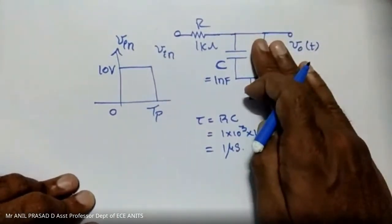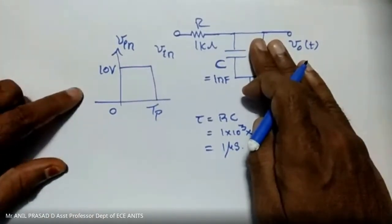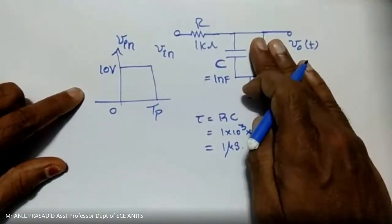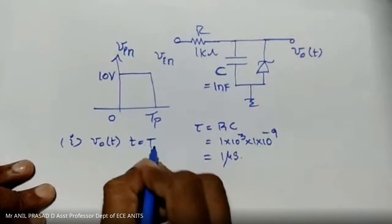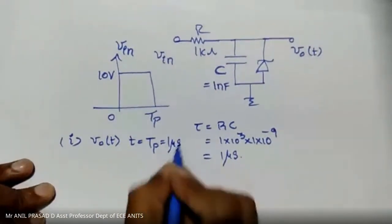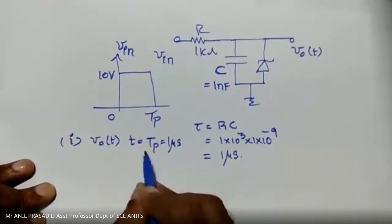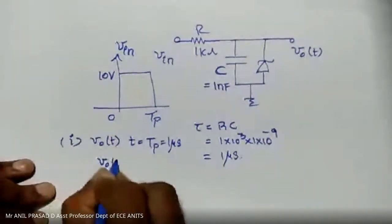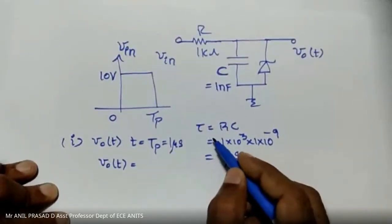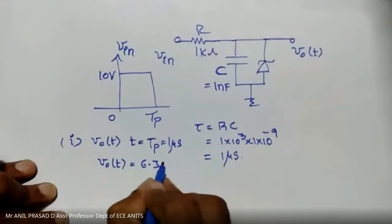Suppose the Zener diode is not there. It is simply an RC low-pass filter circuit when a pulse input is given. The first question: find the output voltage at T equal to Tp equal to 1 microsecond. Tau is also 1 microsecond. Without calculating, the output voltage is 63.2% of the maximum value. Maximum value is 10V, so 63.2% is 6.32 volts.